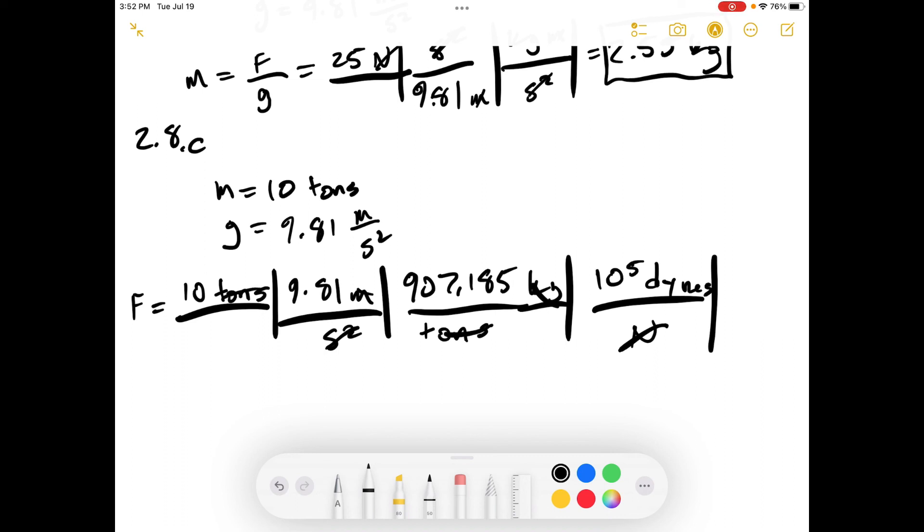Tons, tons, we're just left with the dynes. All right, so if we calculate that, that equals 8.9 times 10 to the 9 dynes. And that is our final answer.